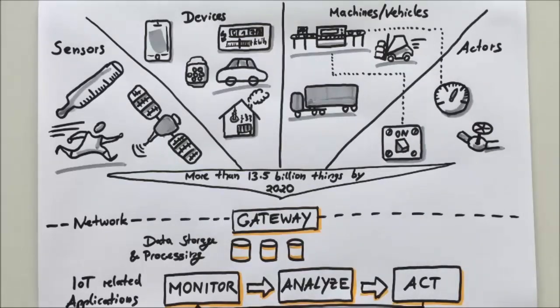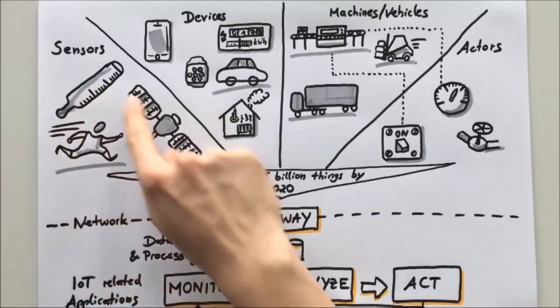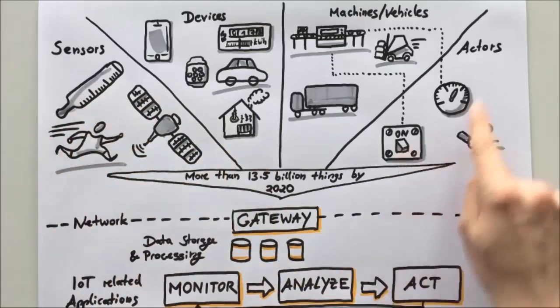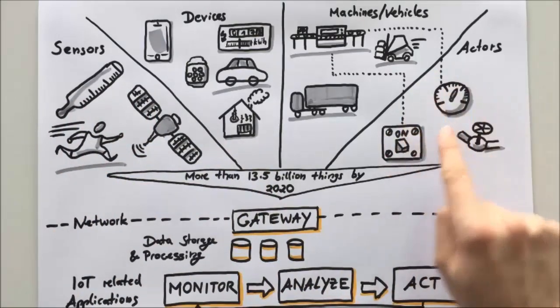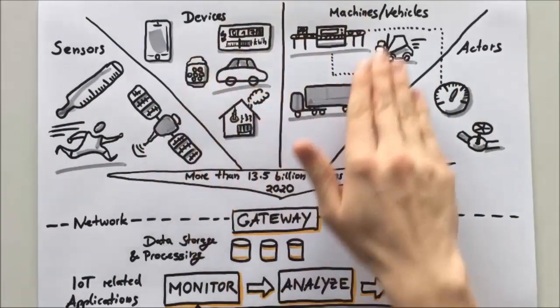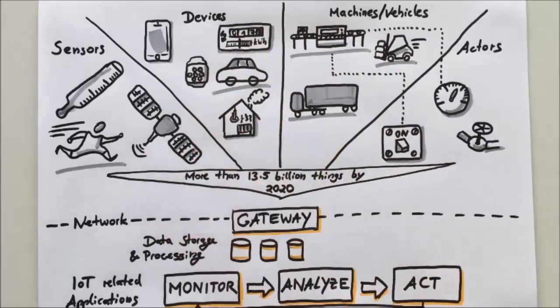To sum up, we can say that the Internet of Things is a network of sensors and actors that are implemented into devices, machines, and so on. All of these things are monitored, analyzed, and controlled by IoT-related applications, which are powered by data storages, their data processing capabilities, and a gateway that collects the output data from all the relevant things in the network.